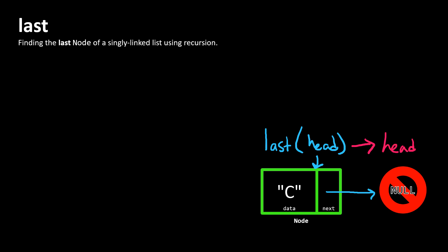This is our base case, and our base case is the one where we're going to stop recurring. This is the simplest form we can imagine this function being called on.